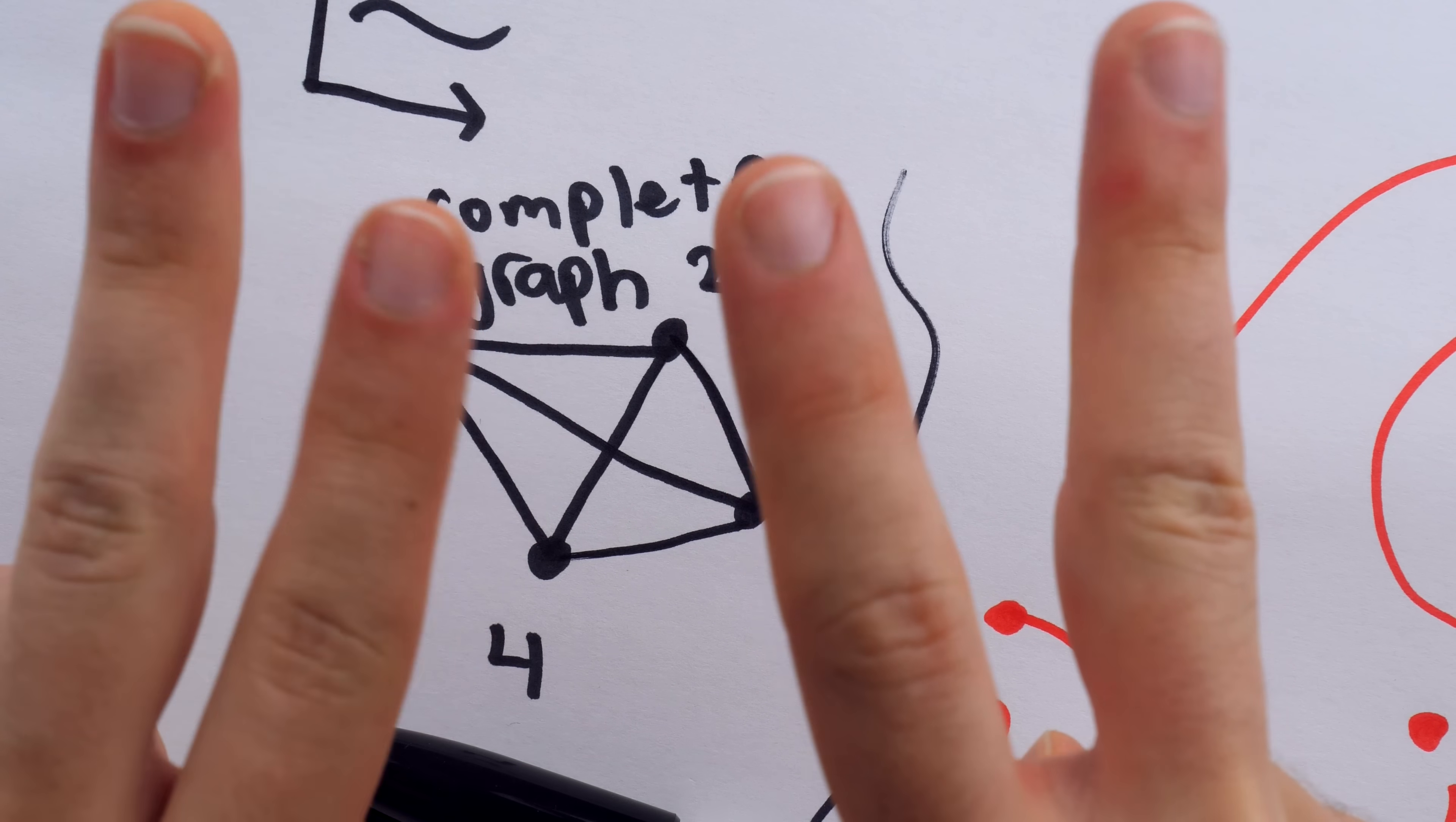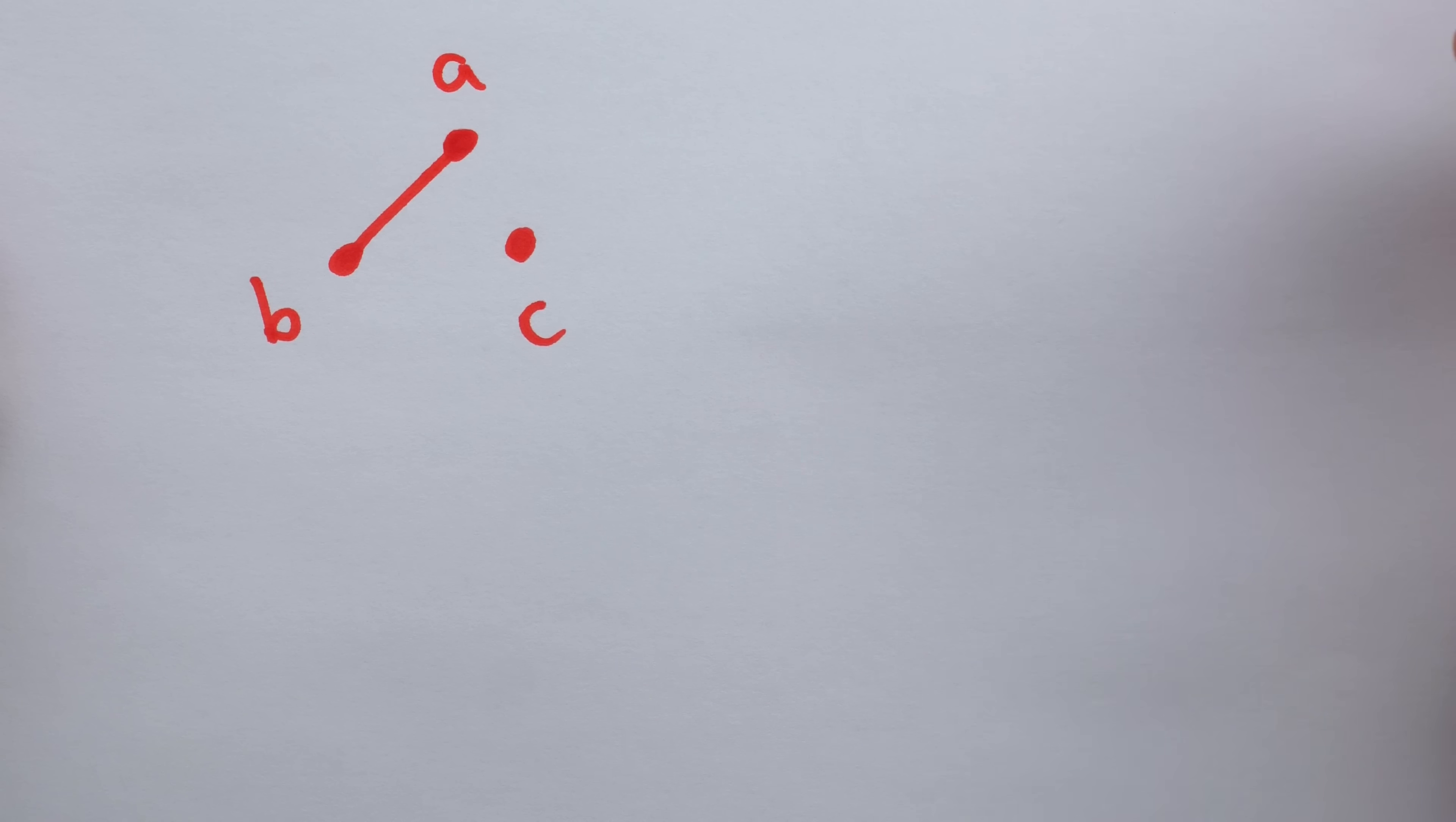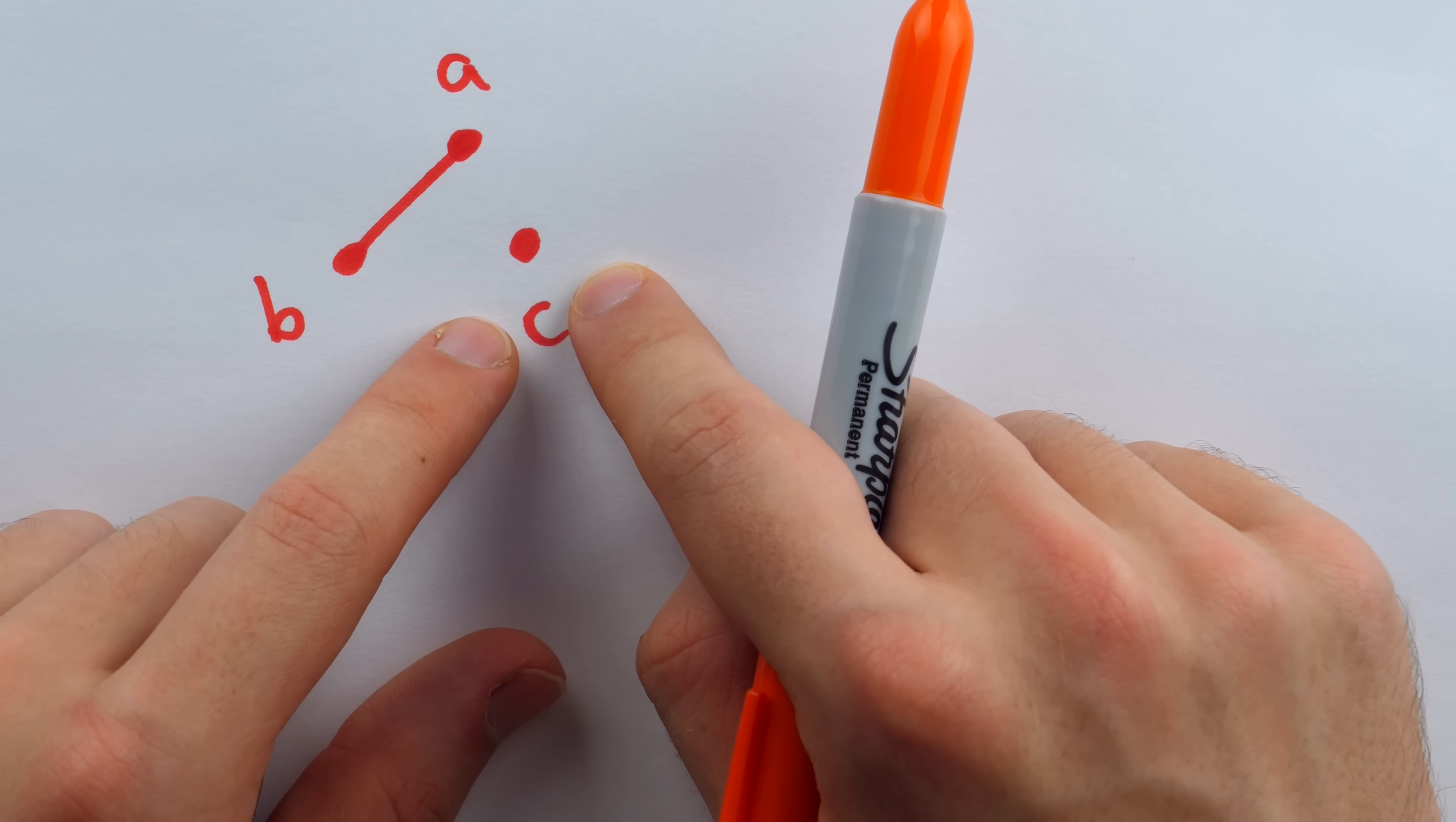Now, the only other thing you need to understand before we see where the double factorial comes in is this idea of something called a matching. Before I sketch out another example for that, we might say that this edge joining one and three matches the vertex one to the vertex three. Because each edge is incident with two vertices, we can view each edge as matching one vertex to another.